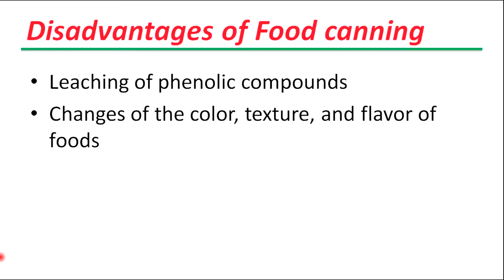There are also some disadvantages of food canning. Several studies on the effect of canning have reported a decrease in total phenolic and flavonoid content, mainly due to the leaching of phenolic compounds into the surrounding brine or syrup. The heating used to process canned food does change the color, texture, and flavor of foods. To overcome these issues, salt may be added to canned vegetables or sugar to fruits to retain color and texture, but many consumers prefer the firmer texture and more intense flavor of frozen or fresh foods over canned foods, and may want to avoid added salt or sugar.